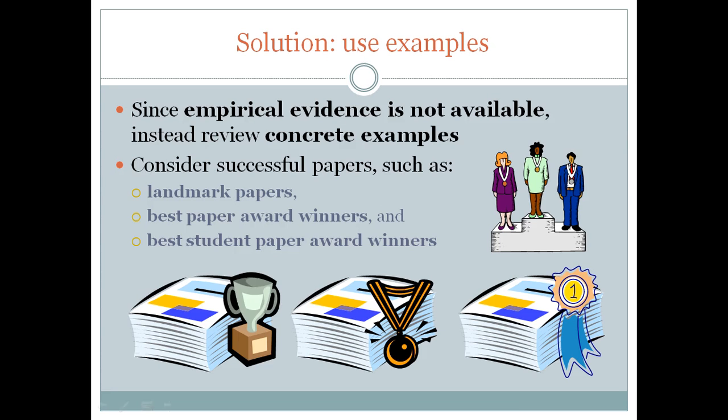So what can we do? We don't have empirical evidence. Probably the best solution is to use examples — not just any examples, but the landmark papers, the best paper award winners, the best student paper award winners. These may be the most representative of the ideal goals that the peer reviewers are seeking. Of course, there's no guarantee of this — I don't have any empirical evidence to prove this. It's just one possible solution.